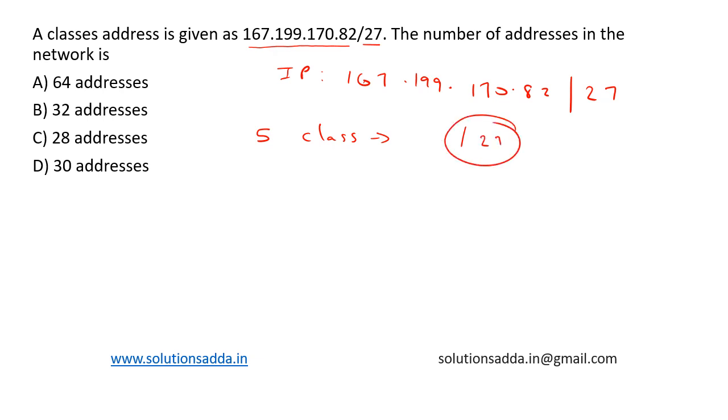In a classless addressing, the number of addresses is given by 2 to the power 32 minus n. Here n represents the slash followed by number notation, so here it is 27.